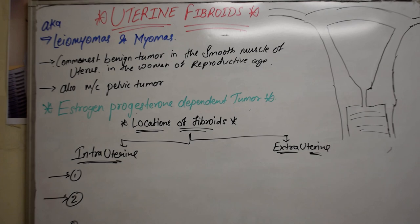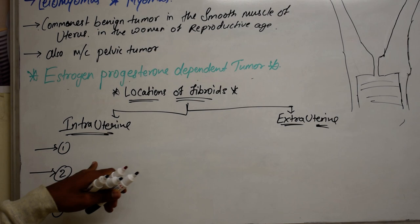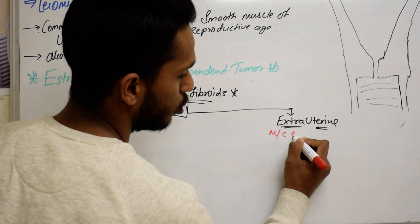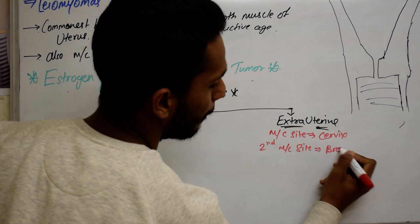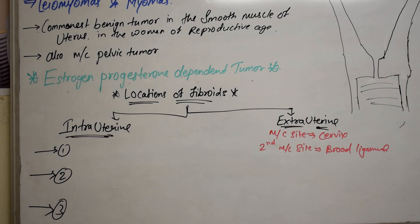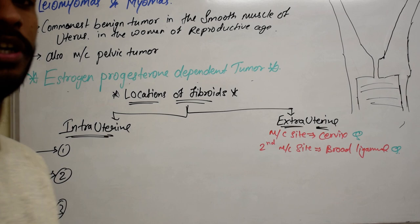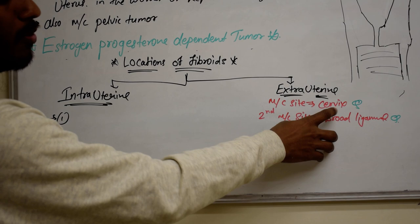Now let's talk about the locations of the fibroid. Fibroids can be extrauterine or intrauterine. The most common extrauterine site is the cervix, and the second most common extrauterine site is the broad ligament. This can be a question in many exams.